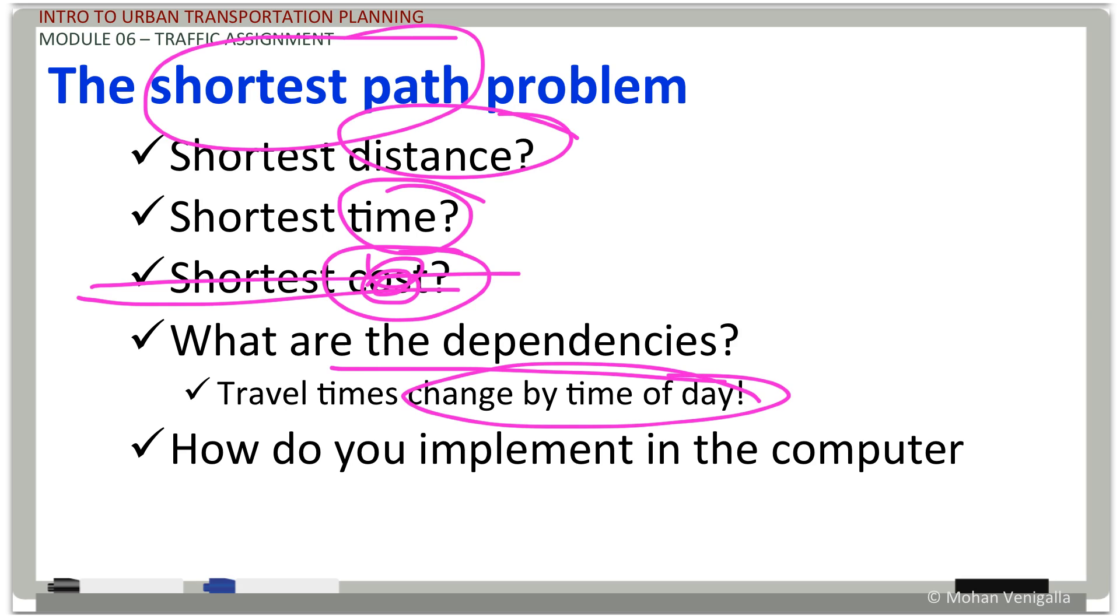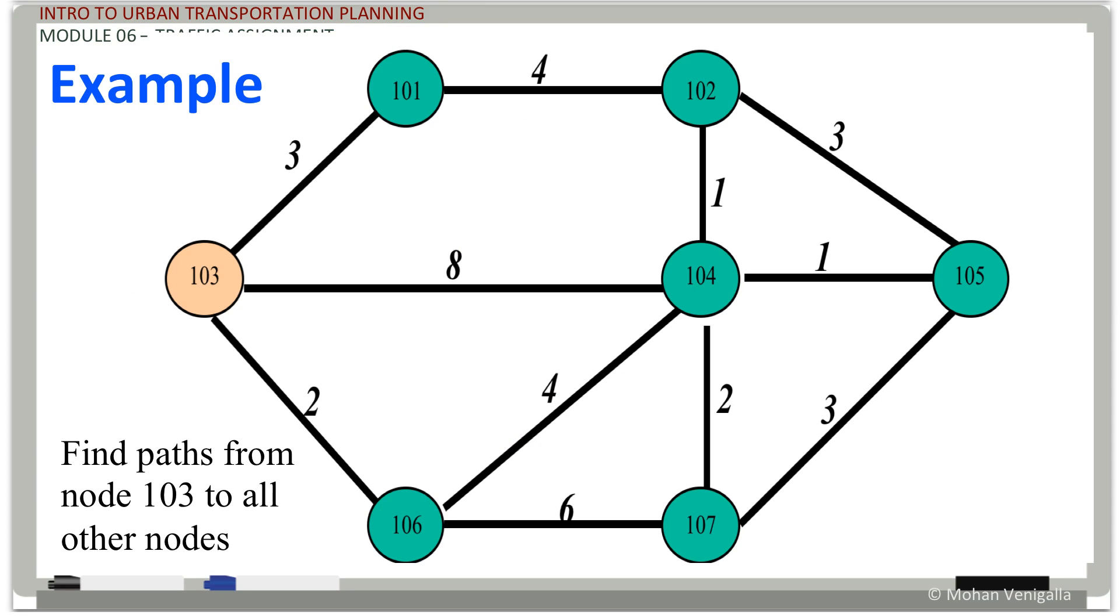Now we are also probably getting there. We have HOT lanes, you avoid HOT lanes, but right next to it there are regular other lanes as well. Same goes in California, maybe the cost is a factor in some parts of California. What are the dependencies? Travel times may change by time of day, for example. Those are what I mean by dependencies. And how do you implement this in computer? Those are some other questions we will answer here.